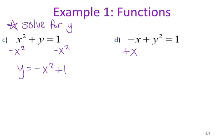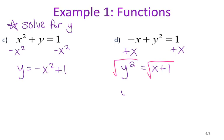For letter D, I'm going to get my y squared by itself. I'll start by adding x to both sides, so I have y squared equals x plus one. Now I need to undo the square by taking the square root of both sides, which gives me y equals square root of x plus one. Anytime you take the square root of both sides when solving an equation, there's always a plus or minus involved — it could be the positive square root of x plus one, or it could be the negative square root of x plus one.